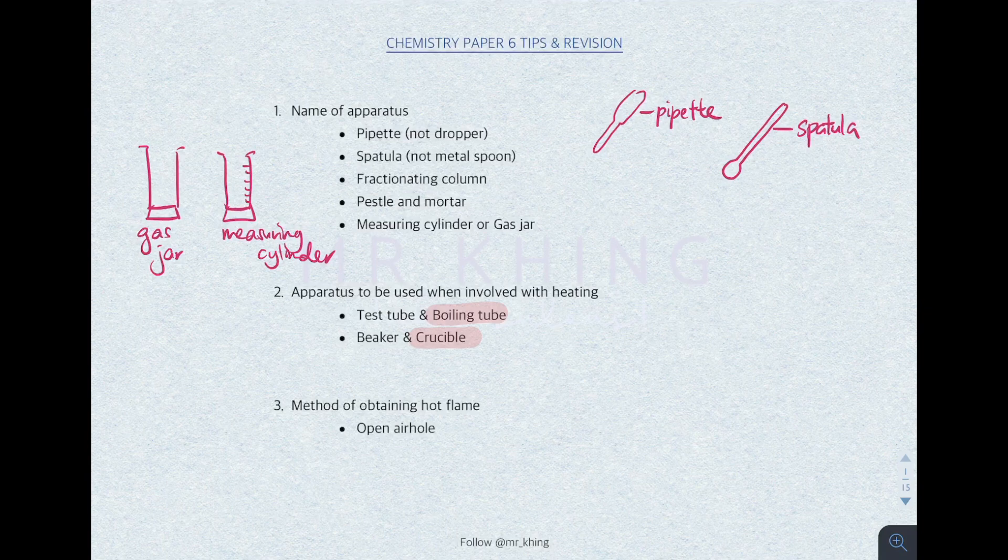What is the difference between a measuring cylinder and a gas jar? Remember, the gas jar is the one without any measurements. The one with ratings on it is what we call a measuring cylinder. Also, to obtain a hot flame from a Bunsen burner, you have to make sure that the air hole is open.